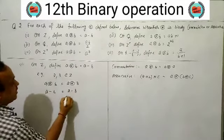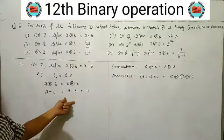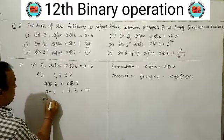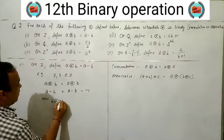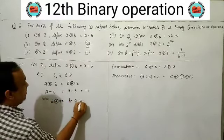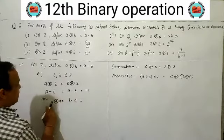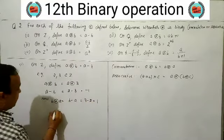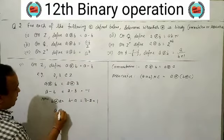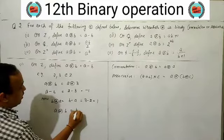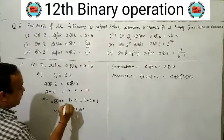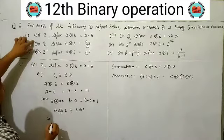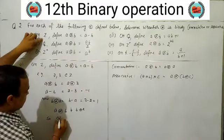2 minus 3 gives minus 1. Now B★A means B minus A: 3 minus 2 = 1. So A★B = -1 but B★A = 1, which means A★B is not equal to B★A.